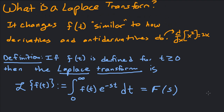A lot of times s is called the frequency variable. If t represents time, then to make this exponential unitless, s has to have units of 1/time, which is generally called frequency. So s can represent some kind of frequency in a very abstract sense. Capital F(s) is the Laplace transform of little f(t). If we take the Laplace transform of g(t), we call it capital G(s), and so forth.